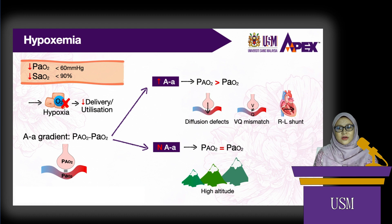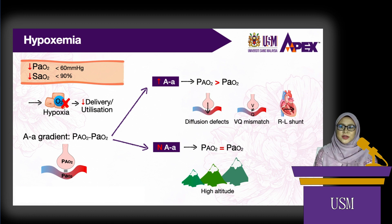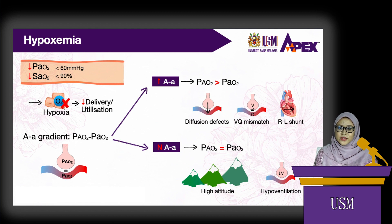Equilibration across the alveolar capillary barrier is normal, so the arterial blood achieves the same reduced pressure of oxygen. Another example is hypoventilation. Hypoventilation decreases the alveolar pressure of oxygen. Equilibration across the alveolar capillary barrier is normal, so the arterial blood achieves the same reduced pressure of oxygen.